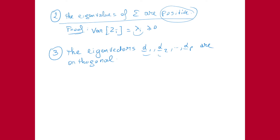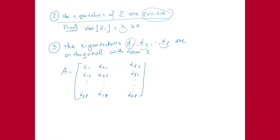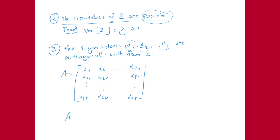The third important result: the eigenvectors alpha1, alpha2, all the way to alphaP, are orthogonal and have norm 1 — meaning they are orthonormal vectors. We define the matrix A by placing the eigenvectors alpha1, alpha2, and so on in its columns. This matrix A is an orthogonal matrix, which has the property that its inverse equals its transpose.